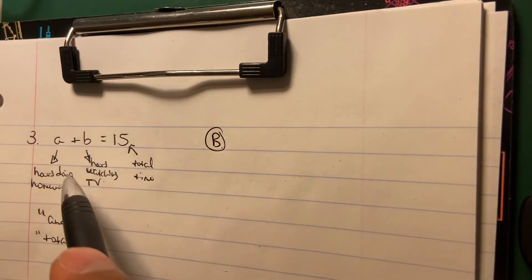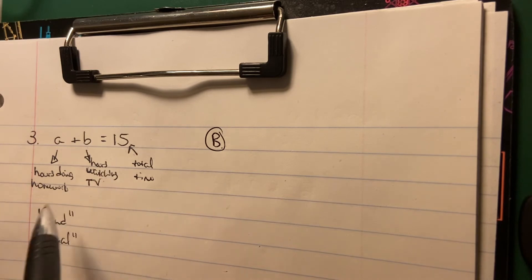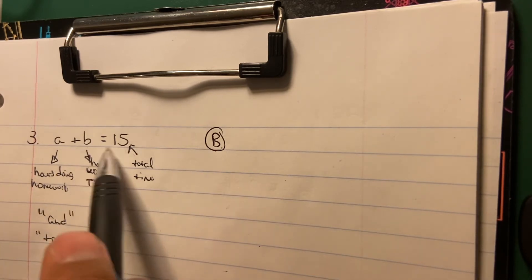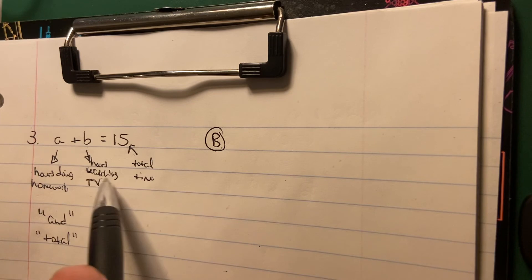So when you read through the four multiple choice choices, B, which is that number of hours spent watching TV, makes the most sense.